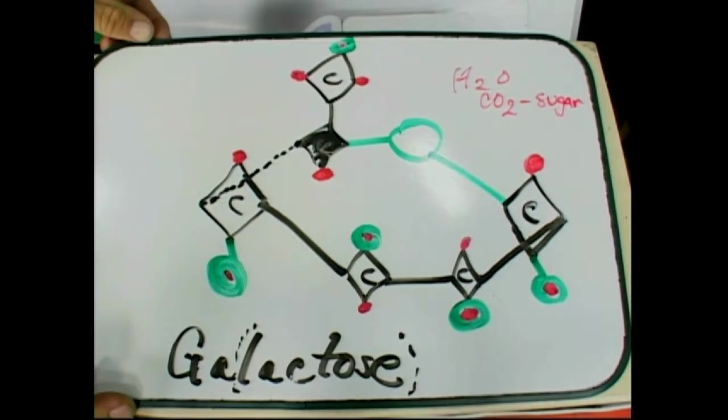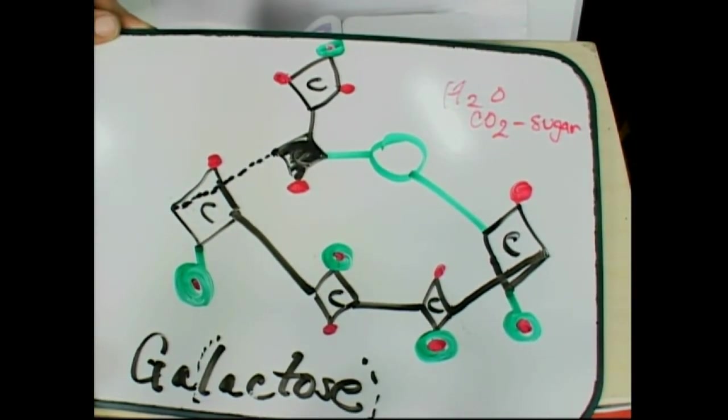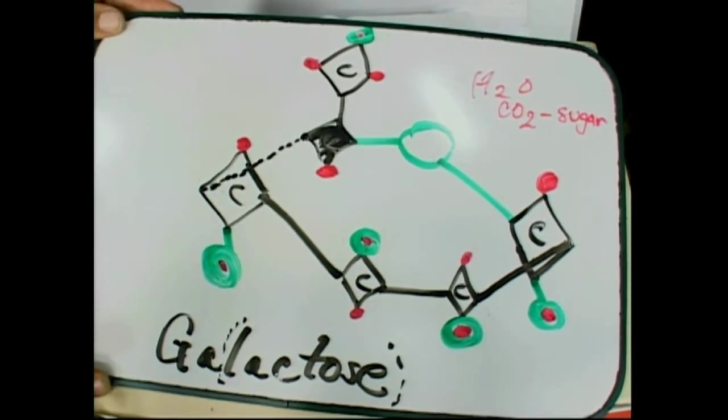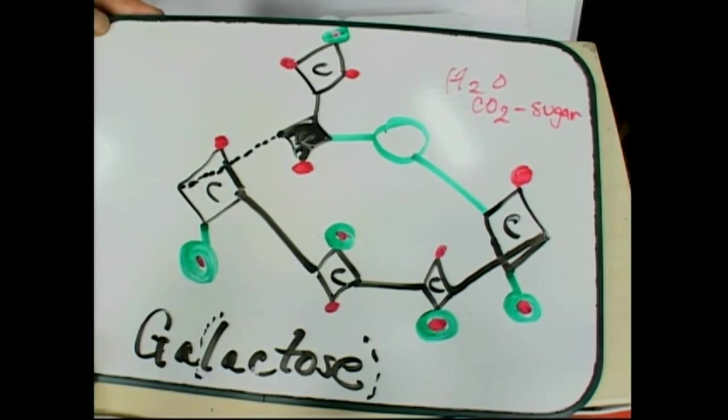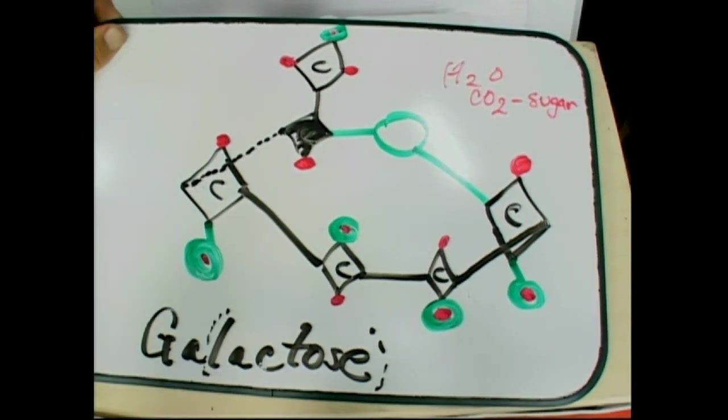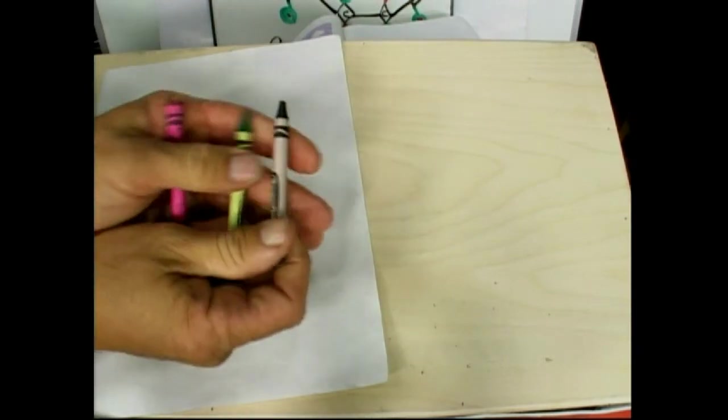So isn't that cool though? Just dots, triangles, fill in the blanks. This is college stuff, kids. Nursing, biology, nutrition. So now that we know what galactose looks like, we're going to go back to kindergarten. We're going to draw lactose, which is a glucose bound to a galactose.